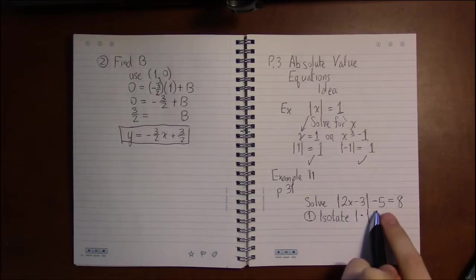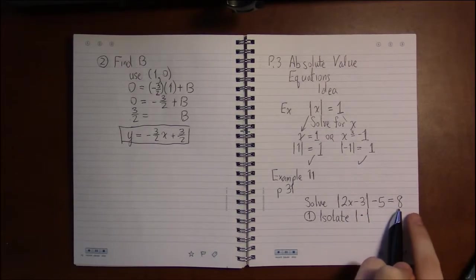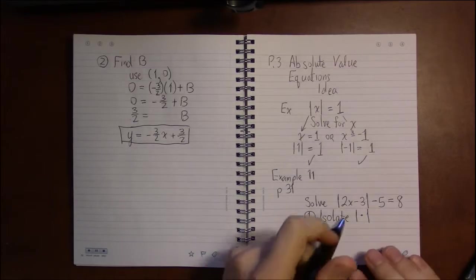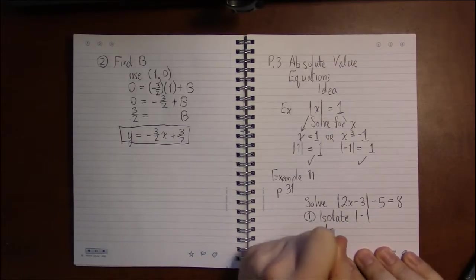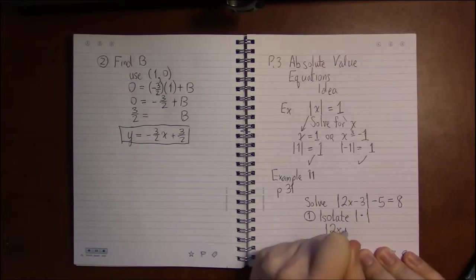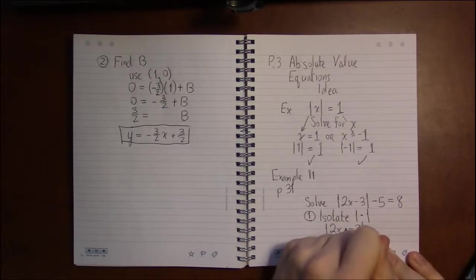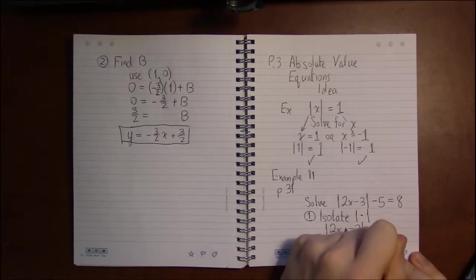In this case, that means move the 5 to the other side. Here we're subtracting 5, so to move it we'll add 5 to both sides to get absolute value of 2x minus 3 equals 13.